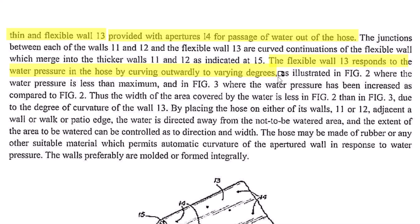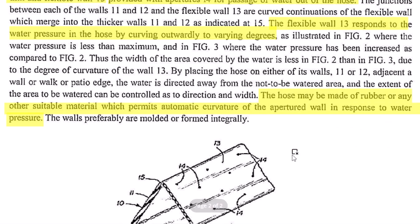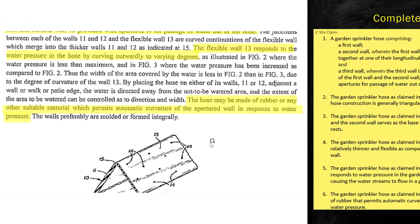Can we look for more information about the third wall? It says the hose may be made of rubber or any other suitable material which permits automatic curvature of the aperture wall in response to water pressure. This could be another dependent claim, but we will not write 'other suitable material' because this is indefinite. So we write: the garden sprinkler hose as claimed in claim 1, wherein the hose is made up of rubber that permits automatic curvature of the third wall. This gives you a few dependent claims.